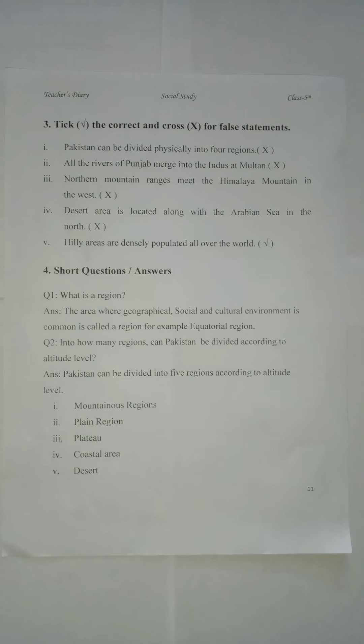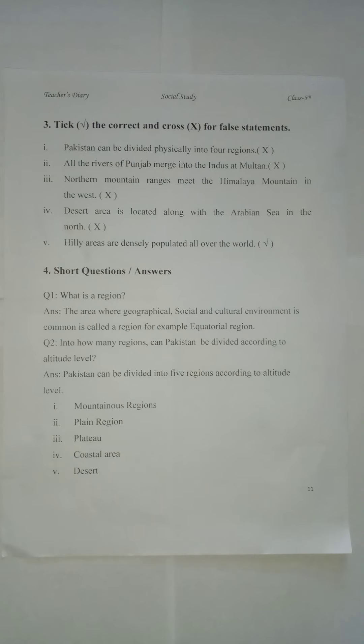Now students, write Short Question Answers. Question 1: What is a region? Answer: The area where geographical, social and cultural environment is common is called a region. For example, equatorial region. Draw a finishing line. Question 2: Into how many regions can Pakistan be divided according to altitude level? Answer: Pakistan can be divided into five regions according to altitude level: 1 - Mountainous regions, 2 - Plain region, 3 - Plateau, 4 - Coastal area, 5 - Desert.